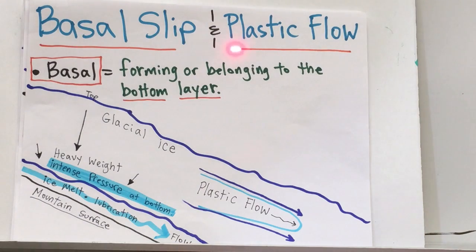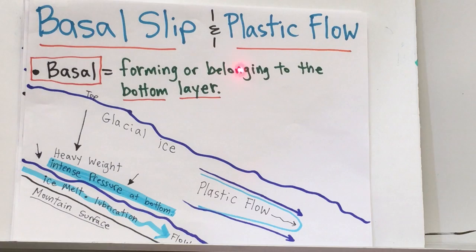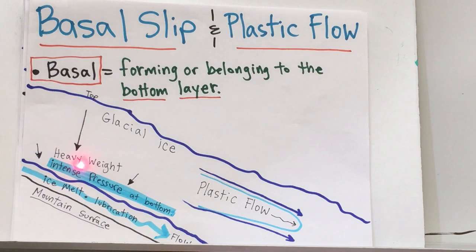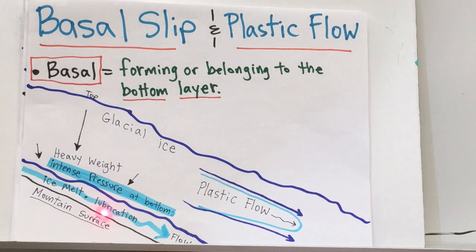Basal slip and plastic flow. The word basal means forming or belonging to the bottom layer. So down here at the bottom — this is the top — you have lots of heavy weight, intense pressure at the bottom. The intense pressure causes ice melt. The ice melting causes lubrication to happen, and lubrication causes downhill flow.